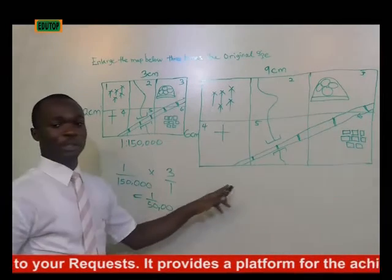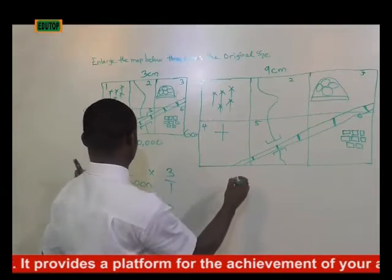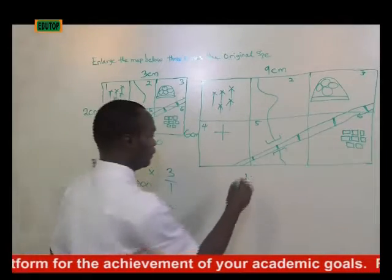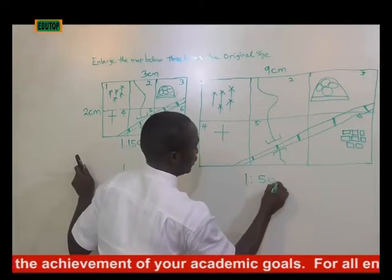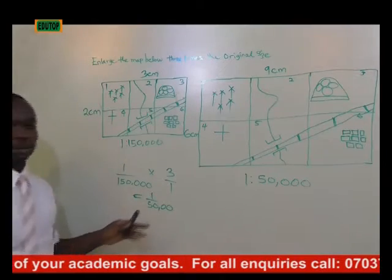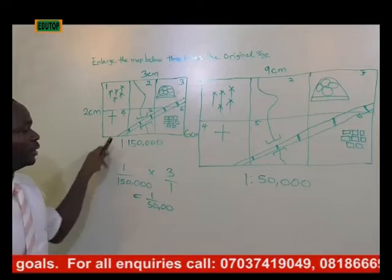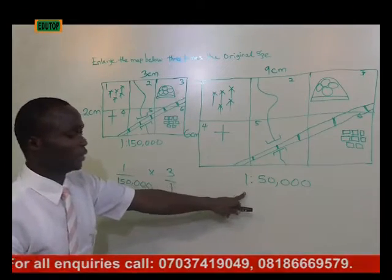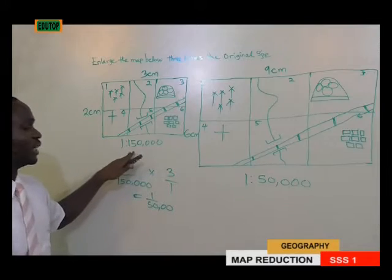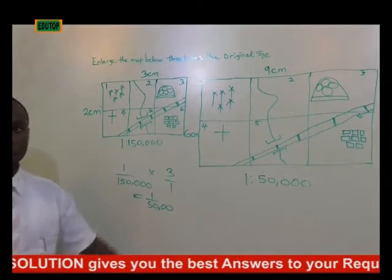Therefore, the scale of the new map that has been enlarged is 1 is to 50,000. So you can see clearly that when we enlarge a map, the scale reduces. But when we reduce a map, the scale increases.